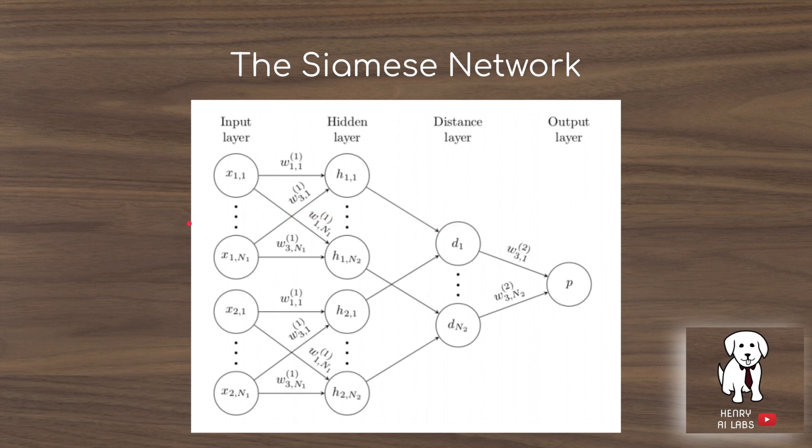This is the Siamese network. The idea is you have two networks which are the same exact network - one is a clone of the other. They're both passed image one and image two, and they learn a distance function between the two vector representations produced by the same neural network.